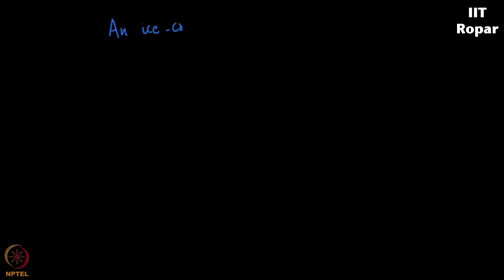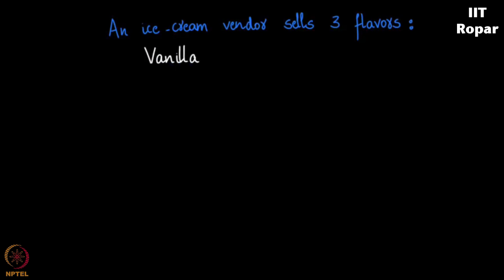Imagine there is an ice cream vendor, he sells three different flavours, precisely three flavours. What are those? Vanilla flavour, chocolate flavour and mango flavour, and he has a whole lot of these ice creams of these individual flavours.